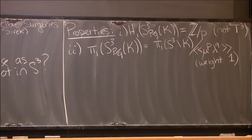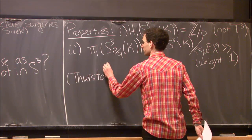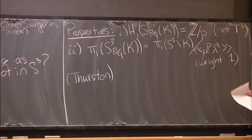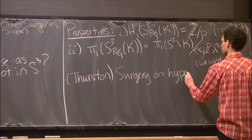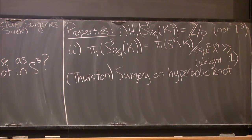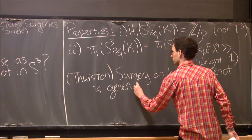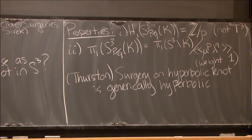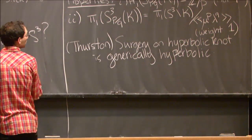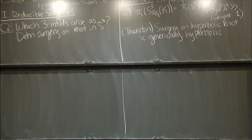One amazing result about Dehn surgery is that if we do surgery on a sufficiently generic knot—say a hyperbolic knot—then most of the time we get something hyperbolic. Surgery on a hyperbolic knot is generically hyperbolic, meaning all but finitely many surgeries yield hyperbolic manifolds. Rather than studying the generic case, I'd like to talk about the exceptional case: what happens when we get non-hyperbolic manifolds from Dehn surgery?